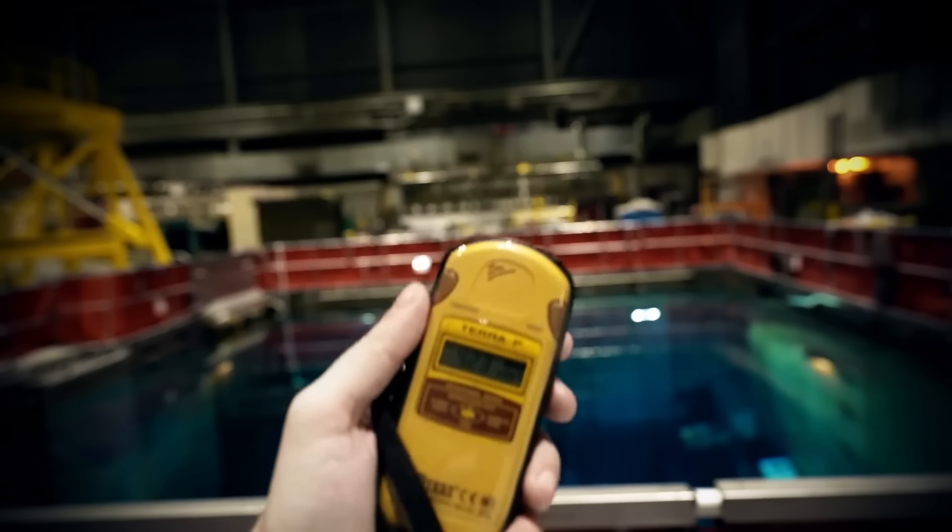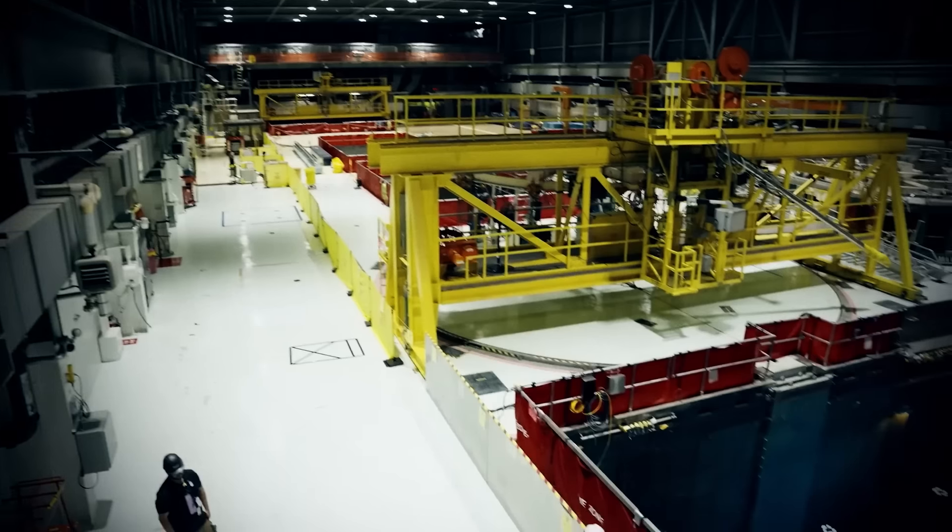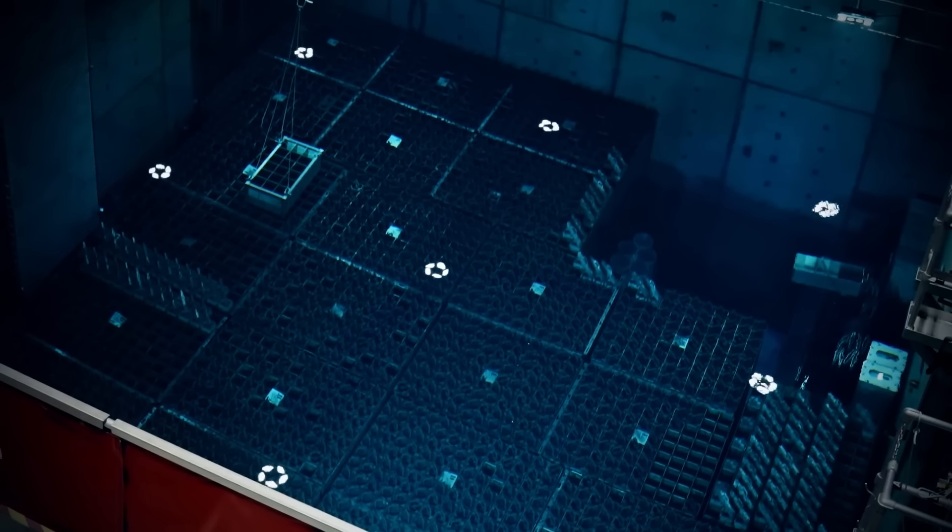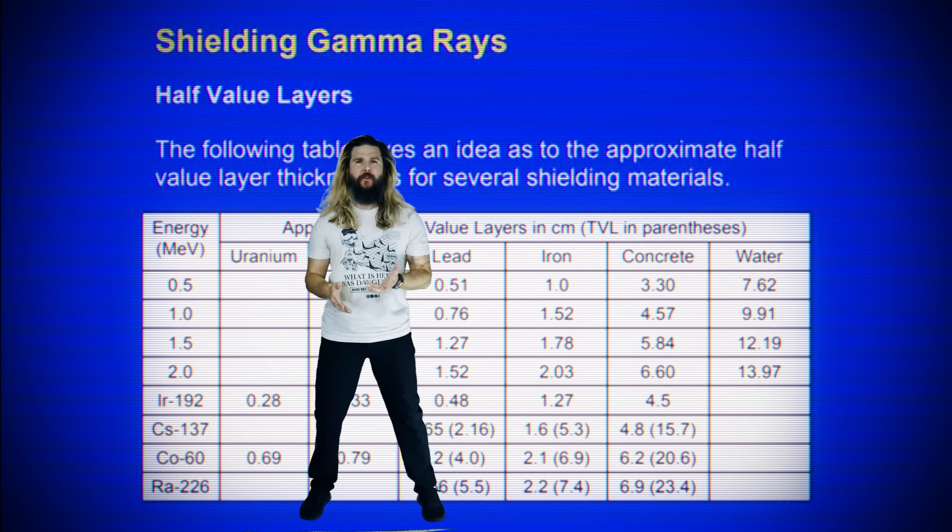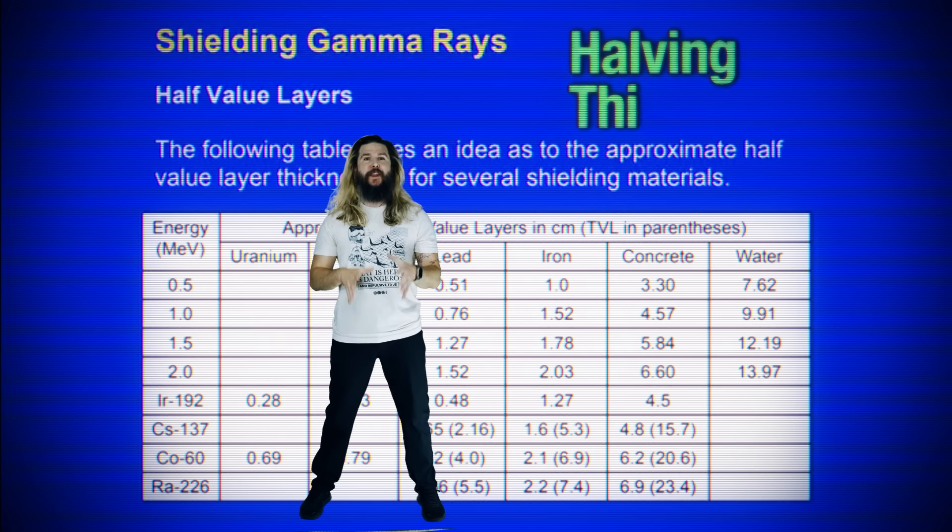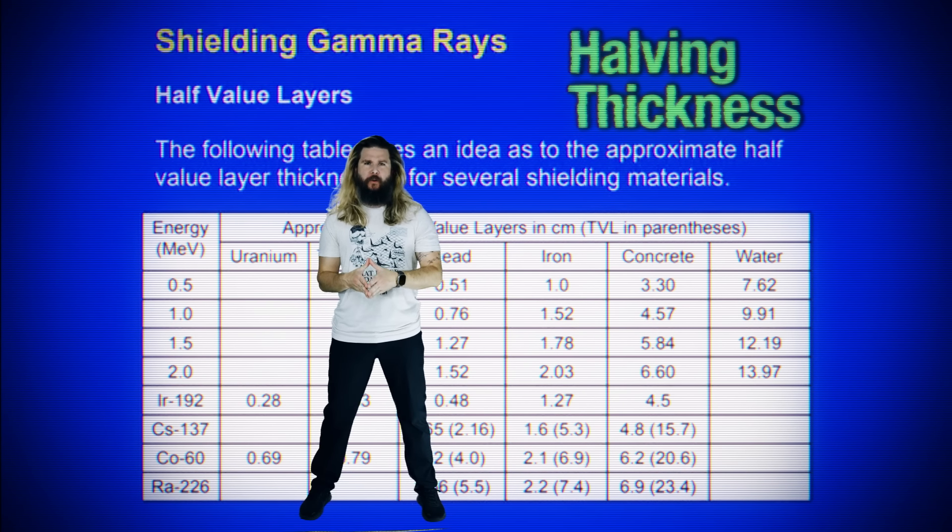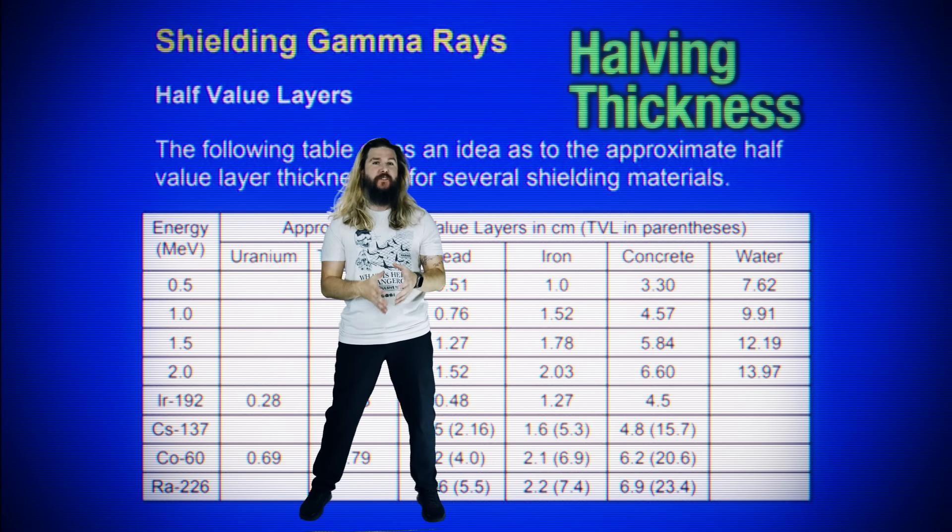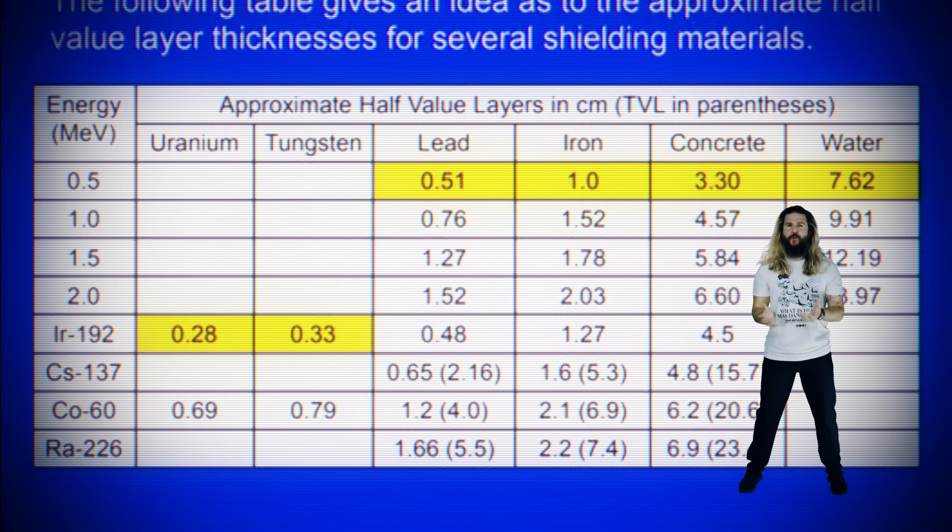We could get even more specific here and talk about breaking radiation, and linear attenuation, and cross sections, and coefficients, and stopping power, but for our purposes, we can stop here. If you know what kind of radiation you're dealing with, a quick way to compare different materials is with what scientists call the half thickness, or half value layer, of a material. It's the amount of material that you need to reduce the intensity of some radiation hitting it by half. And as you can see, if you're using the right stuff, you don't need all that much of it.